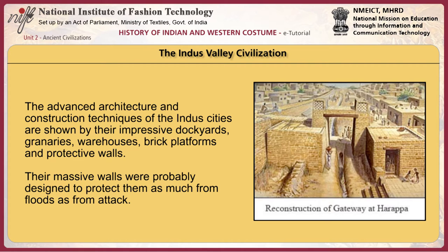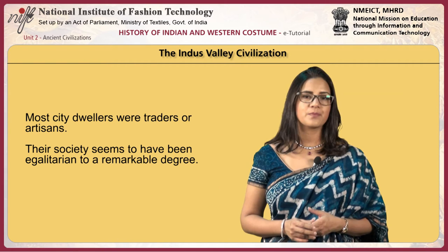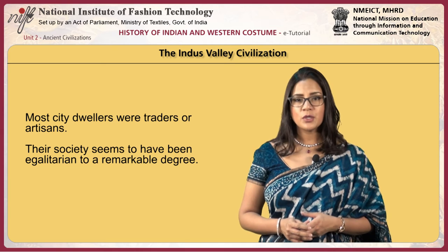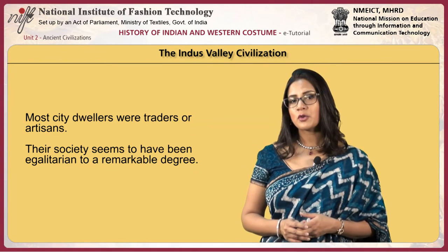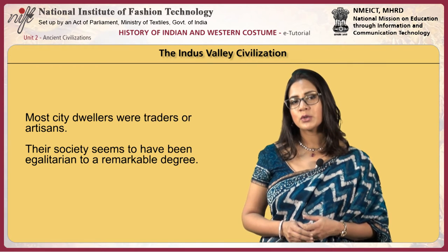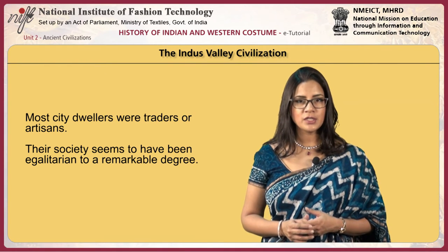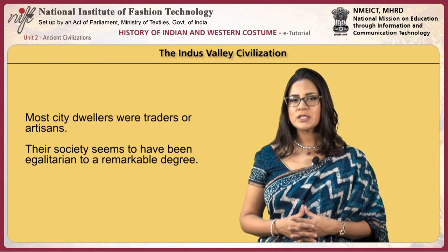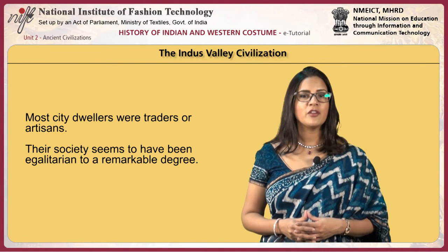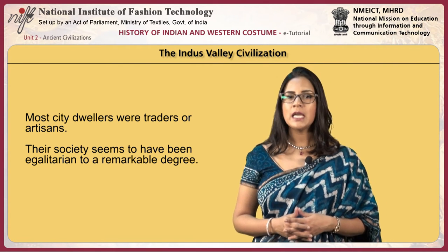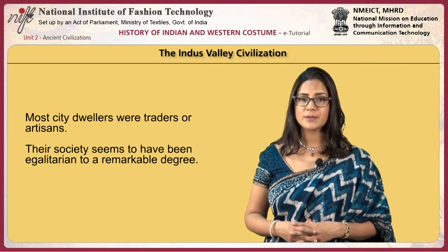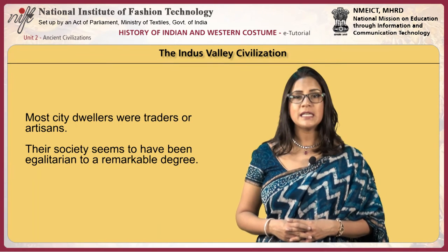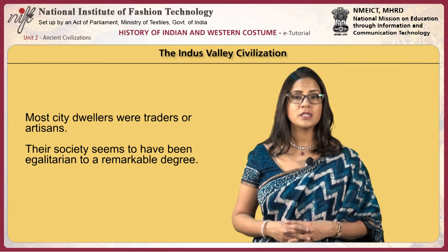Their massive walls were probably designed to protect them as much from floods as from attack. Most city dwellers were traders or artisans who lived with others of the same occupation in well-defined neighborhoods. Although some houses were larger than others, Indus civilization cities do not show the kind of massive gulf between wealthy and poor dwellings found in other civilizations. Their society seems to have been egalitarian to a remarkable degree.